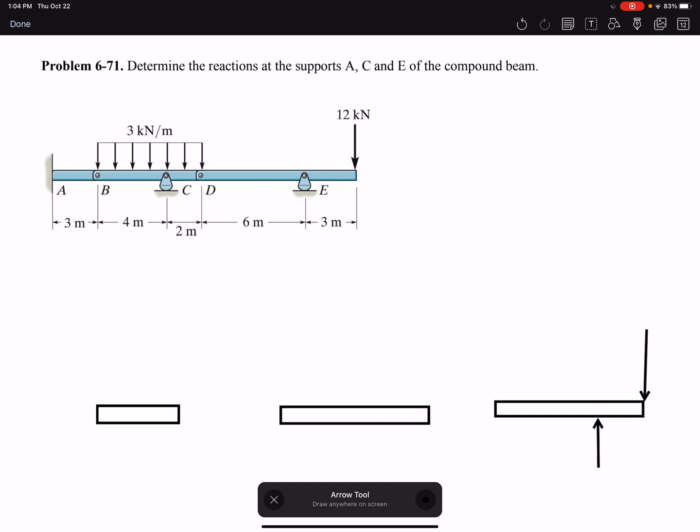And at D it's a pin, so I have one reaction in X and one reaction in Y. I do not know the direction, but I'm going to assume a positive value here. And if I get a negative value, that means the direction I assumed is incorrect. Because there are action and reaction, so DX and DY here would be the opposite direction.